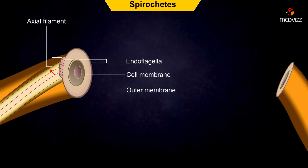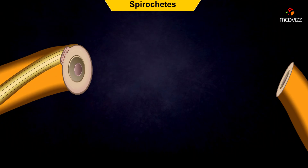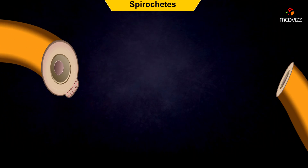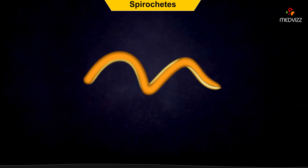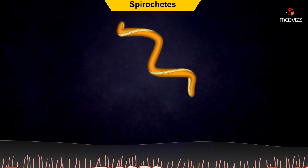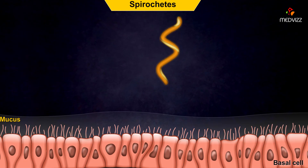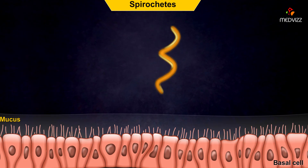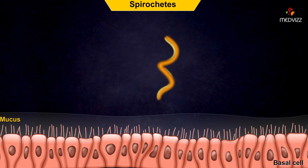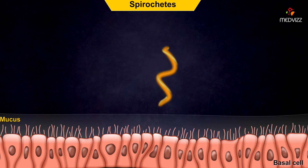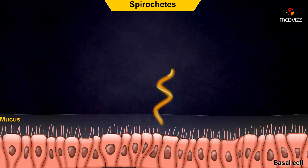Rotation of the endoflagella causes the axial filament to rotate around the bacterium, which causes the spirochete to corkscrew through its medium. It is thought that this manner of movement allows the spirochetes to move more easily through viscous human tissues and fluids, such as mucus, allowing them to easily attach to the cells below.